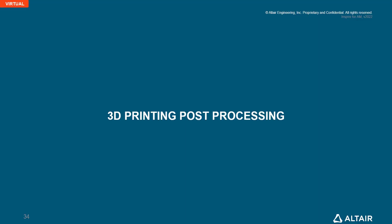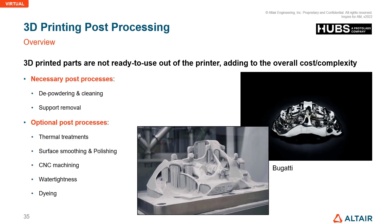3D printed parts are not ready to use straight out of the printer — some cleanup and post-processing of the output geometry is required. Necessary post-processing steps include depowdering, cleaning, and support removal, which are the most essential post-processes for every 3D printed part.